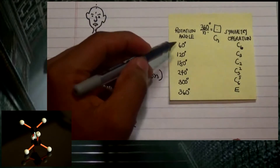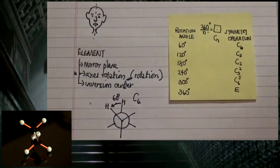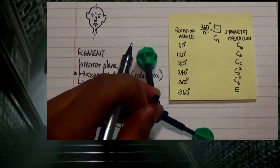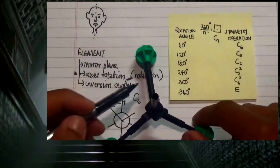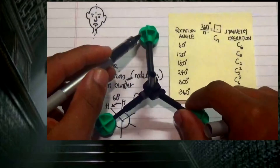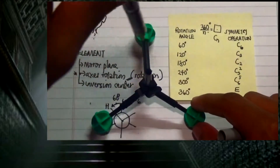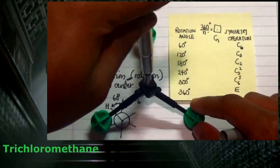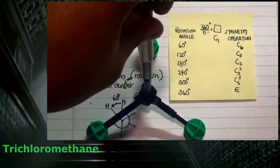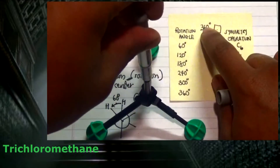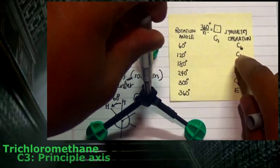Going from 60° to 120° — an example is this compound here, where we have hydrogens and chlorines connected to a central carbon. Using this pen to show the axis of rotation, if I rotate to this position making a 120° rotation and put that into the formula, I get n = 3, so it is a C3 rotation.